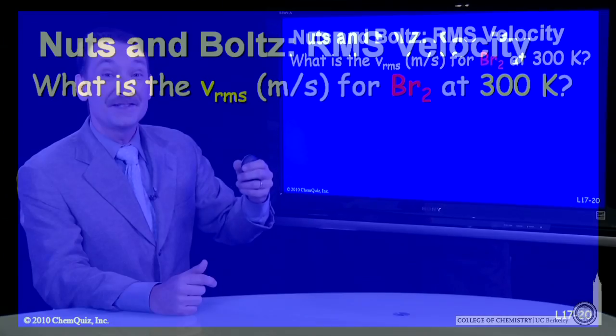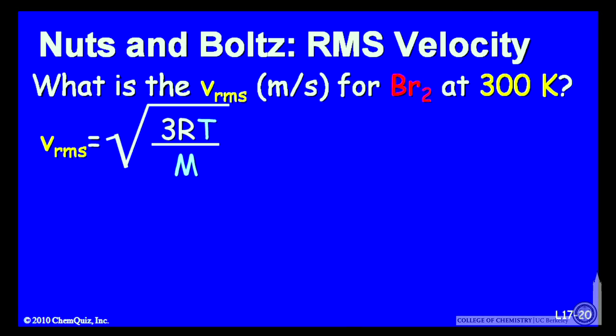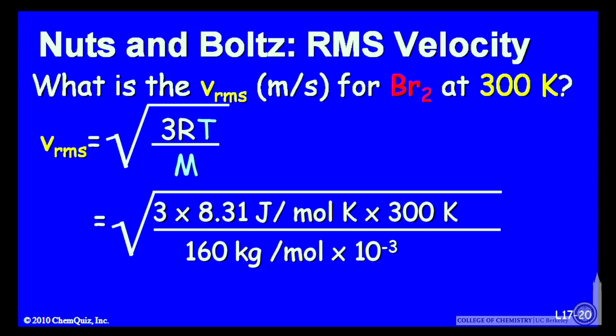So the RMS velocity goes as the square root of 3RT over the molar mass. Simple parameters: the temperature and the molar mass. I can plug those in, 3 times R in joules per mole Kelvin, 300 Kelvin for the temperature, and the molar mass in kilograms per mole.